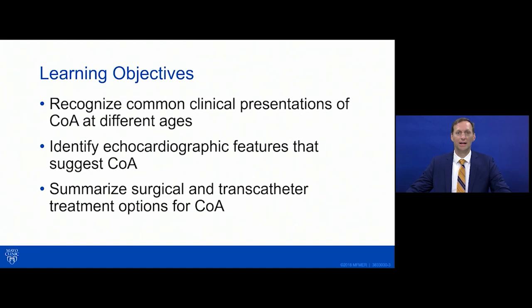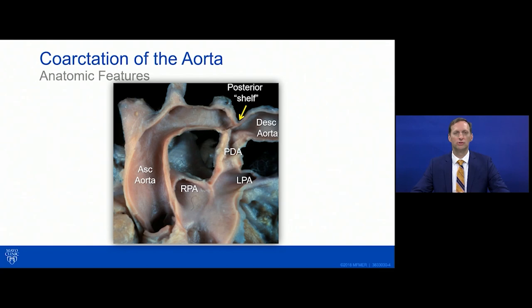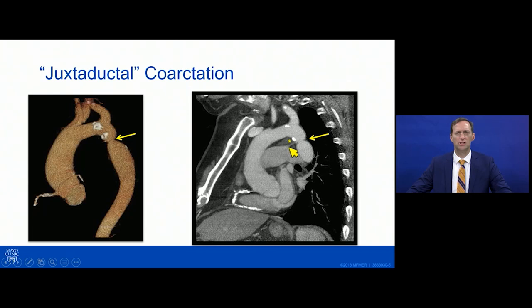The typical coarctation we often talk about is a juxtaductal coarct — meaning opposite the ductus arteriosus — that shows up with a posterior shelf. The presence of the ductus can help us recognize whether it's juxtaductal or not. In some cases there's no ductus but there is a ligamentum, such as in this CT angiogram of about a 40-year-old adult where the ductus was opposite that posterior shelf.